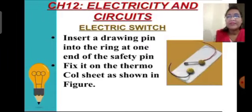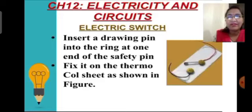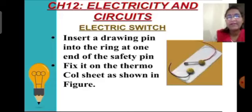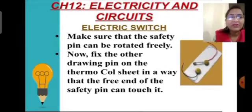In step one, insert a drawing pin into the ring present at one end of the safety pin, then fix it on a wooden board or thermocoil board, as you can see in the image. You all know that at one end of a safety pin there is a small coil or ring-like structure. Insert a drawing pin into that ring and fix it tightly to the wooden board or thermocoil. Make sure that the safety pin can be rotated freely.